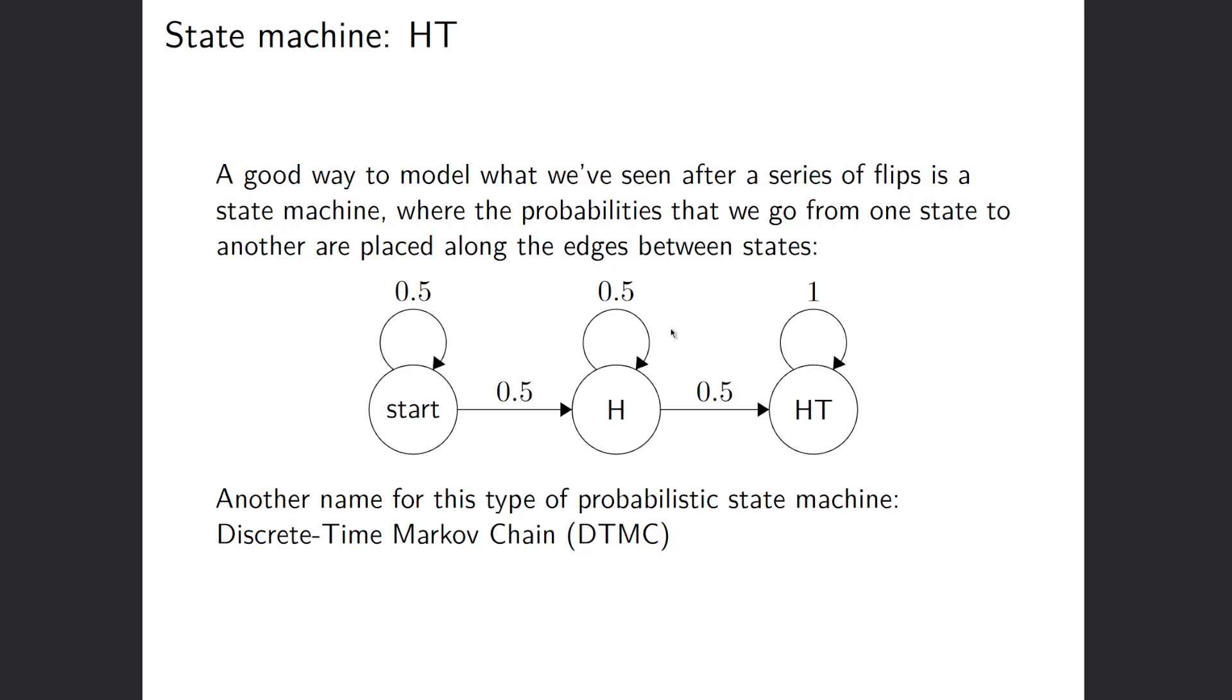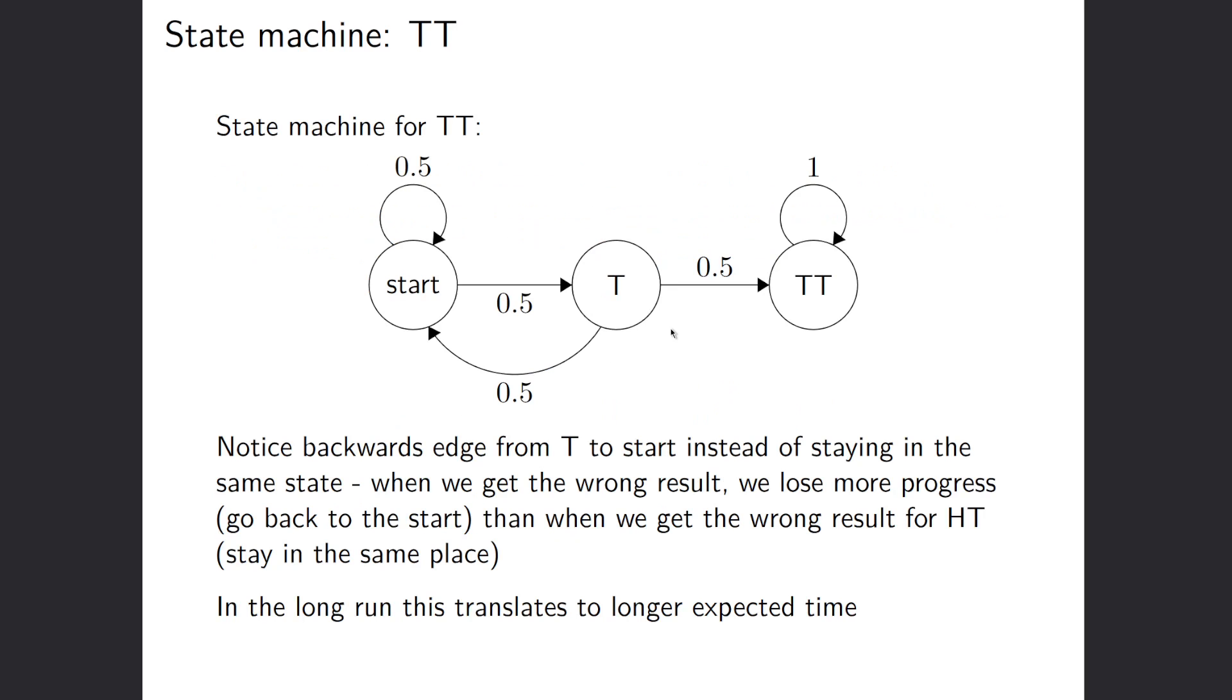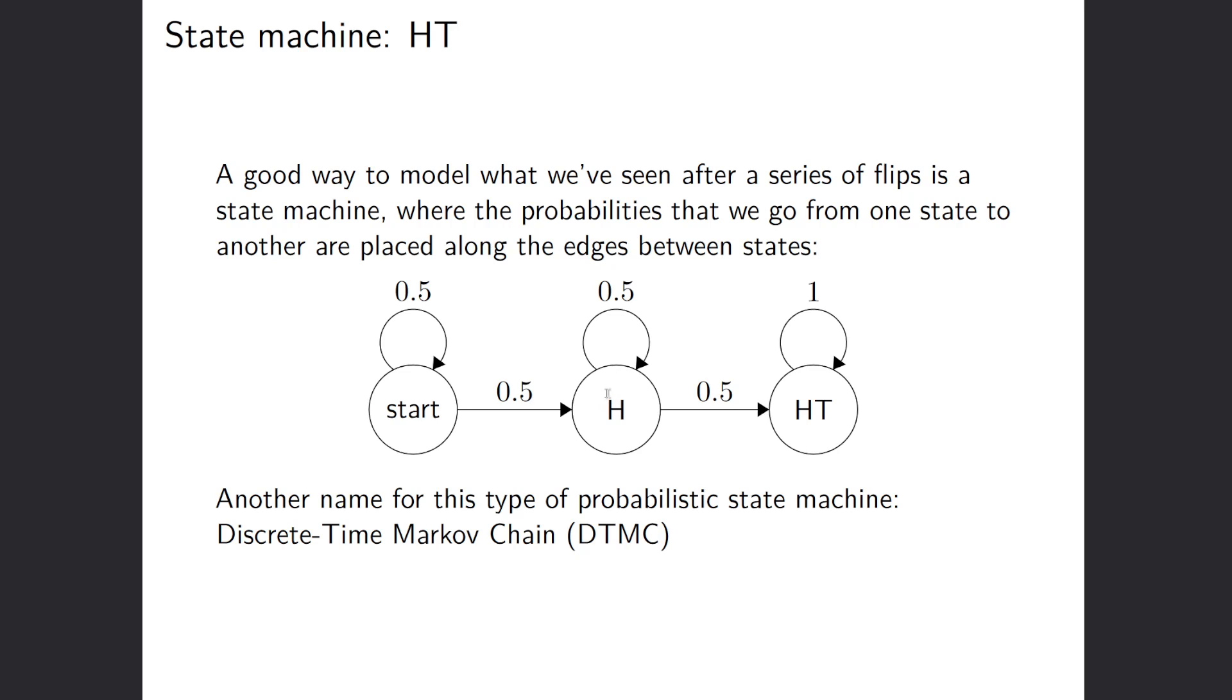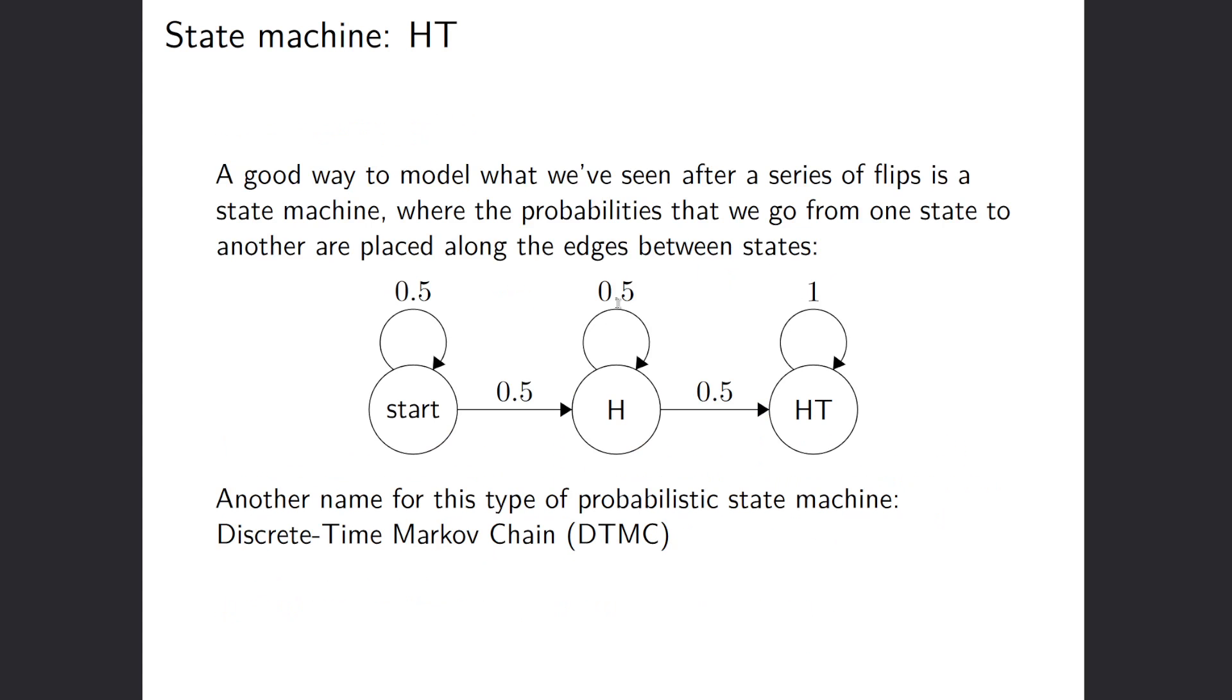And you'll notice the difference between this state machine and this state machine. Here, we never go backwards, we never lose our progress. Here, we actually do lose our progress if we get the wrong coin flip. So it should be a bit more intuitive as to why it on average takes longer for us to see tails tails than for us to see heads tails.